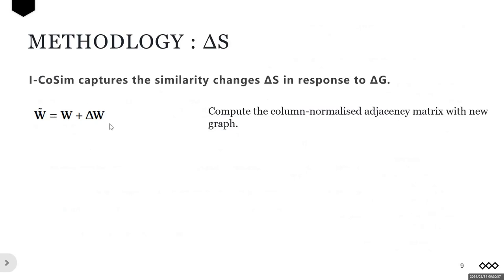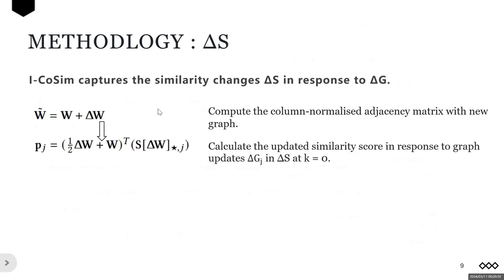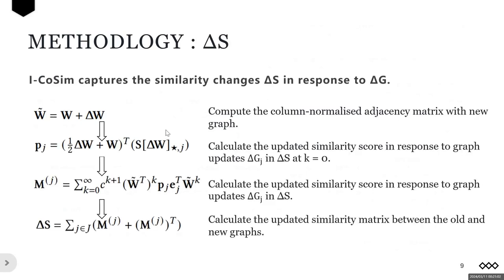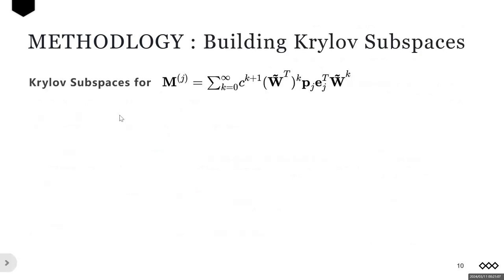Using the delta W, we propose a novel approach to describe the similarity change delta S using the sum of rank-1 Lyapunov matrix formulas, expressed as Mj. To effectively compute Mj,